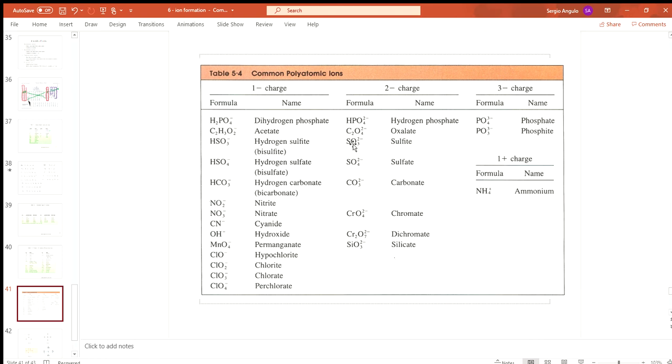The second column is negative two ions—negative two charged groups of atoms. In other words, in the whole structure there are two more electrons than protons. That's what gives the whole structure a negative two charge.